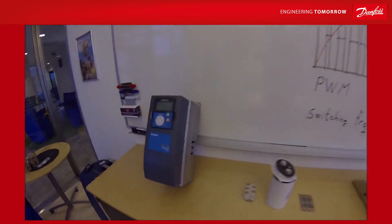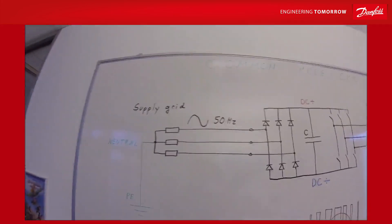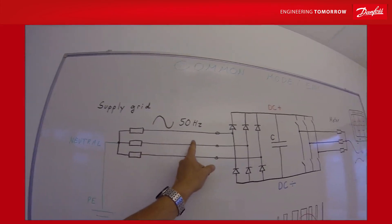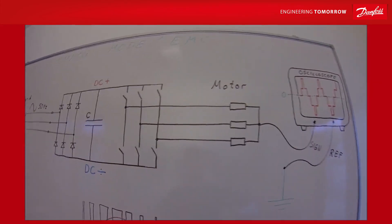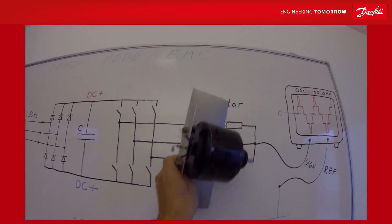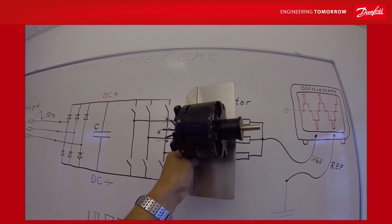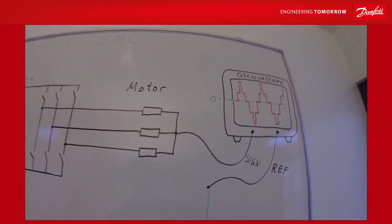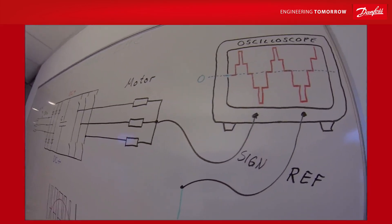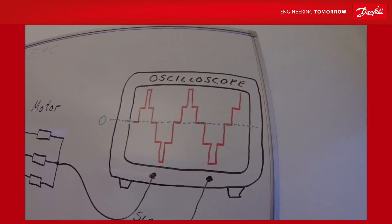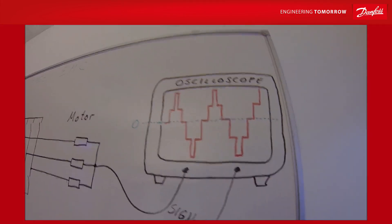Frequency converters basically convert the frequency from the incoming supply to some other frequency which we can control a motor RPM and torque. However, there is a small setback with this because we are using some technology that produces common mode and EMC. Why?